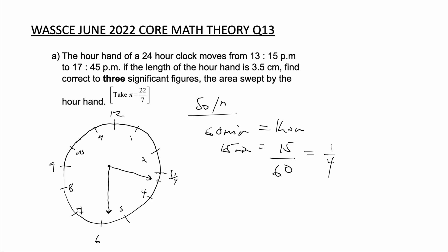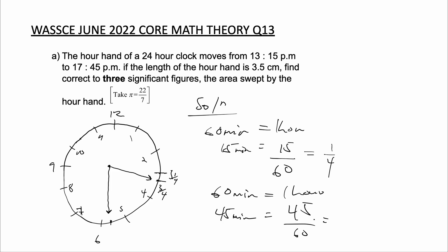Now if this side is 1 over 4, then this side will be 3 over 4 — from here to here will be 3 over 4. We do the same for the other side too. To find from here to here, we know that this time is 5:45, which is 45 minutes past 5. So the same thing: if 60 minutes equals 1 hour, then 45 minutes will be equal to 45 over 60, which equals 3 over 4. So from here to here is 3 over 4, which means from here to here will be 1 over 4.